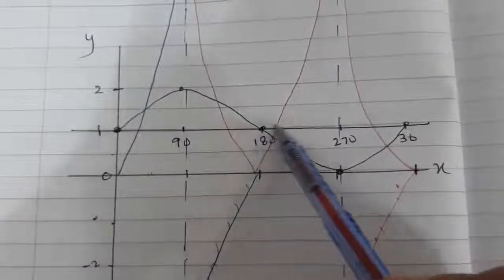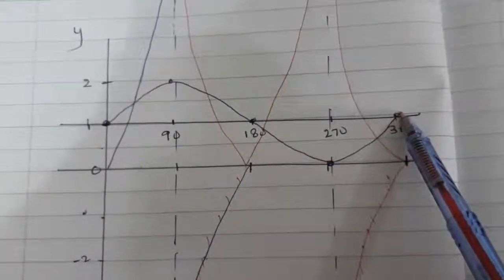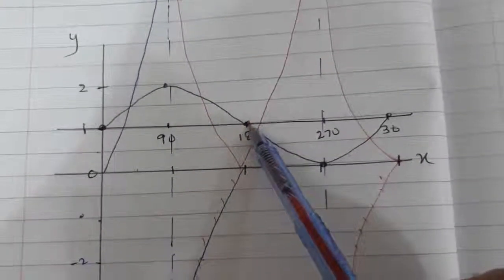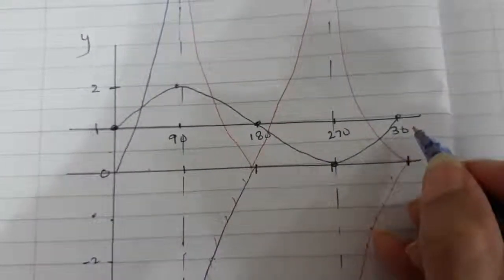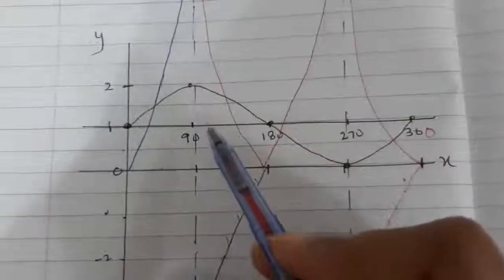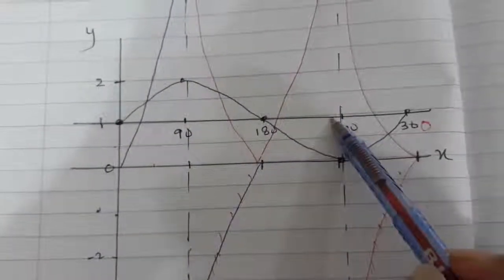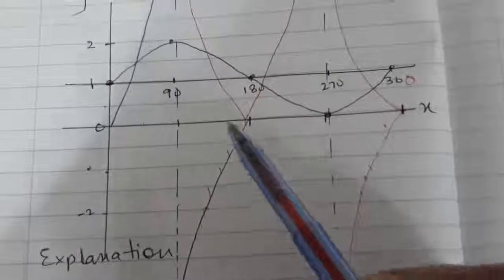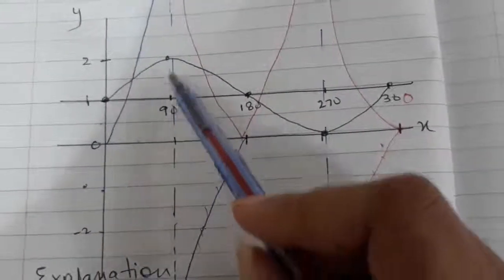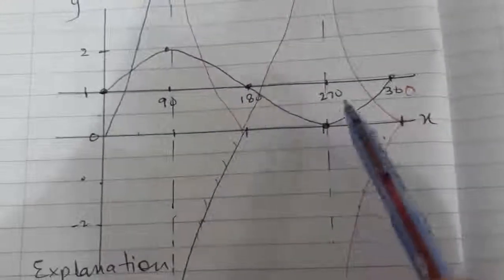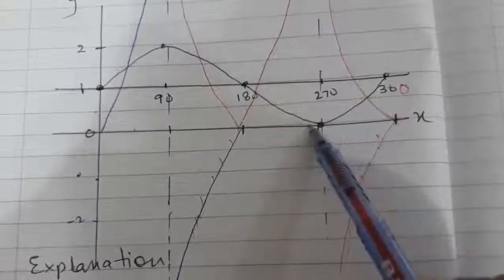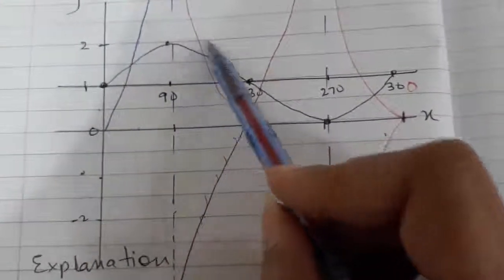The axis of the curve is at y = 1. In the sin graph, the curve passes through the axis of the curve at 0 degrees, 180 degrees, and 360 degrees. The maximum point is at 90 degrees and minimum is at 270 degrees. We have just seen that maximum is at y = 2 and minimum is at y = 0. So we mark y = 2 at 90 degrees and y = 0 at 270 degrees. Hence we have 5 key points and we complete the sketch.